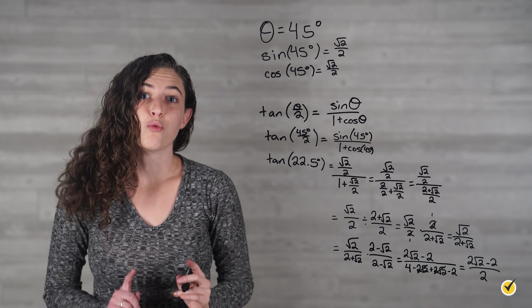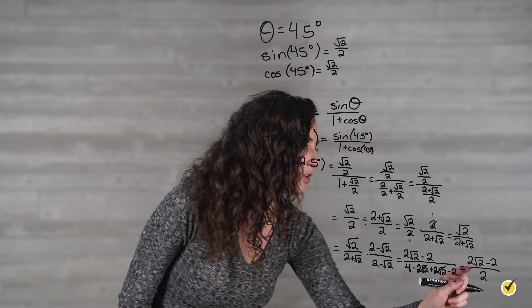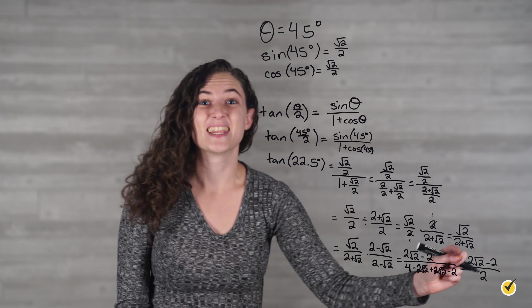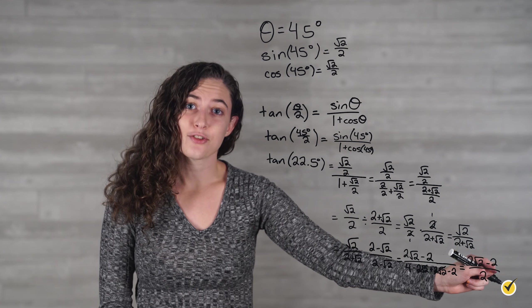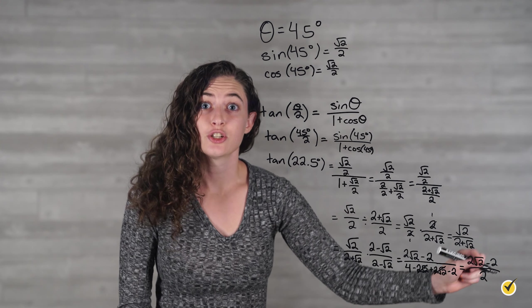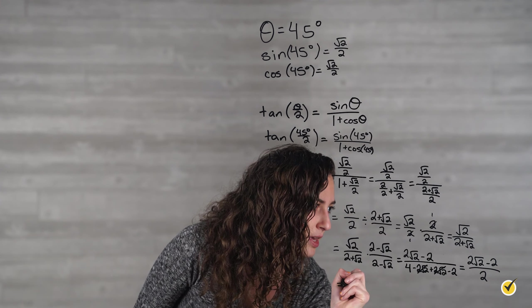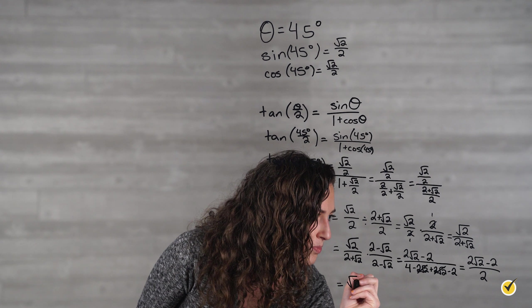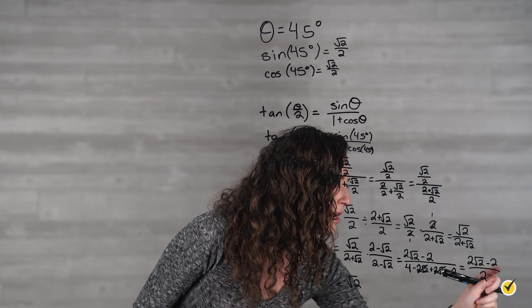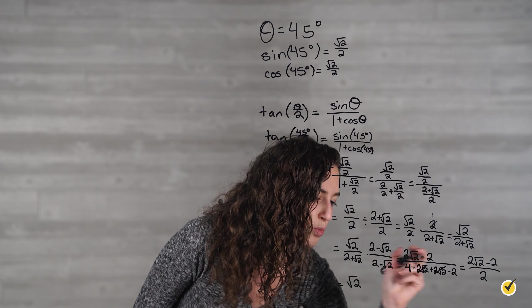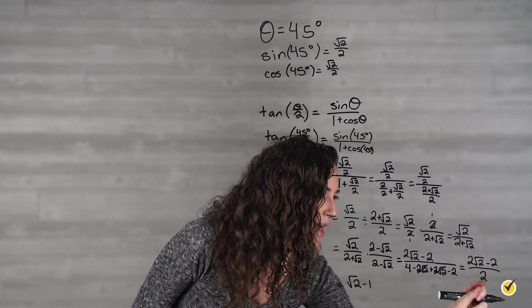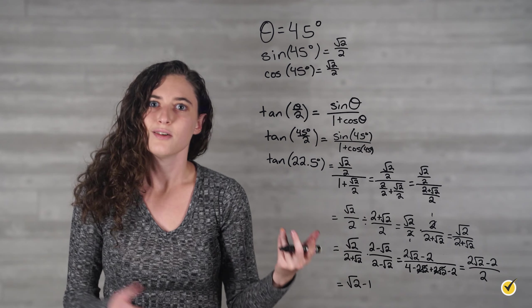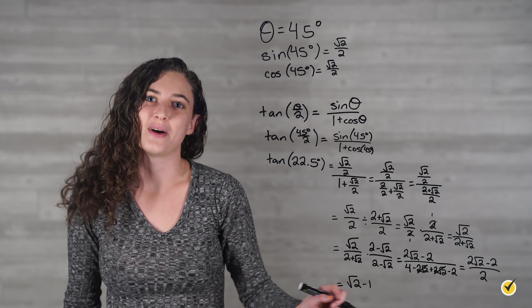Before we're done, we have one final step. If you'll notice, there's a 2 in each one of these terms, so we can divide the entire thing by 2, dividing each term by 2. If we do that, 2 square root of 2 divided by 2 is the square root of 2. 2 divided by 2 is 1, so minus 1. And then 2 divided by 2 is 1, so it'll be over 1, which we know is just the square root of 2 minus 1.